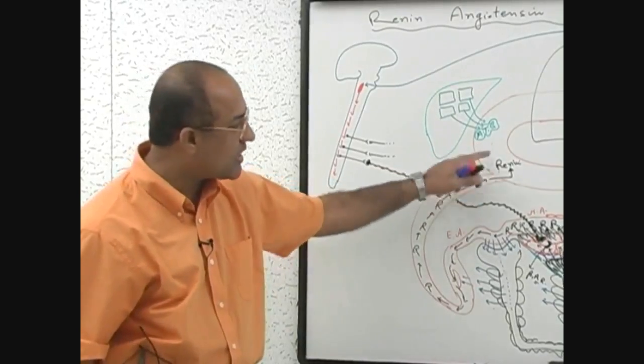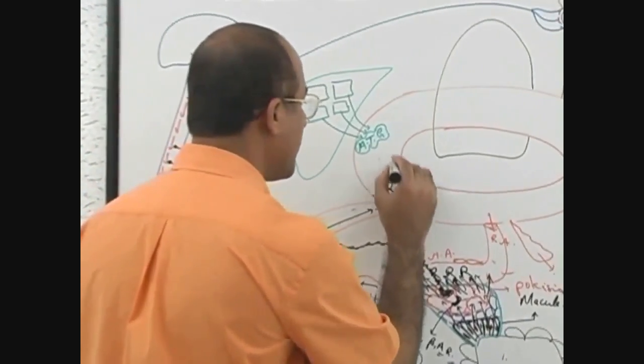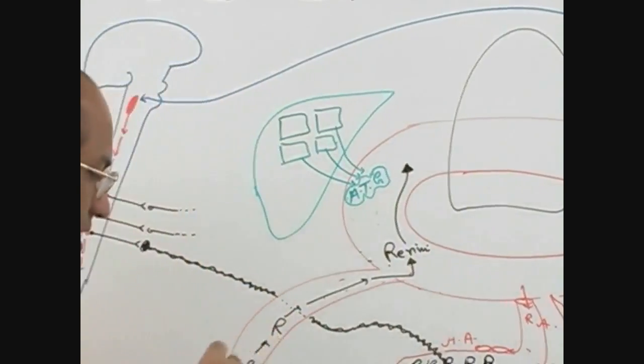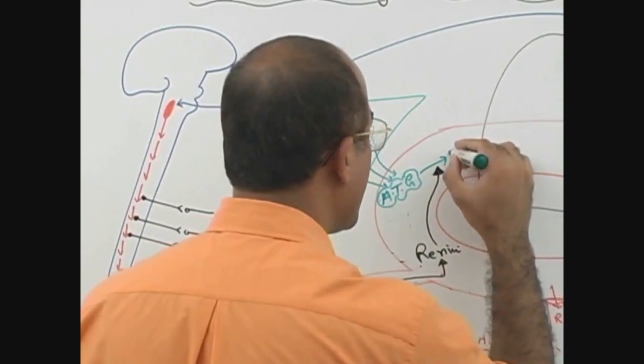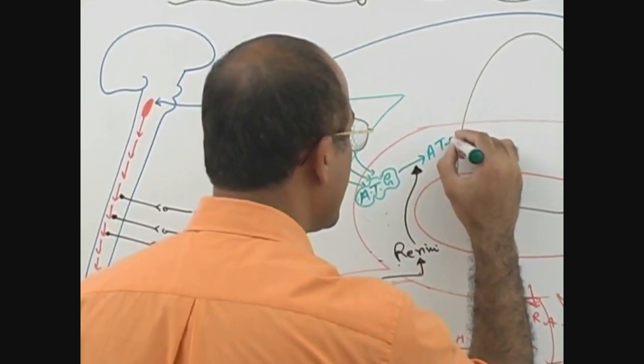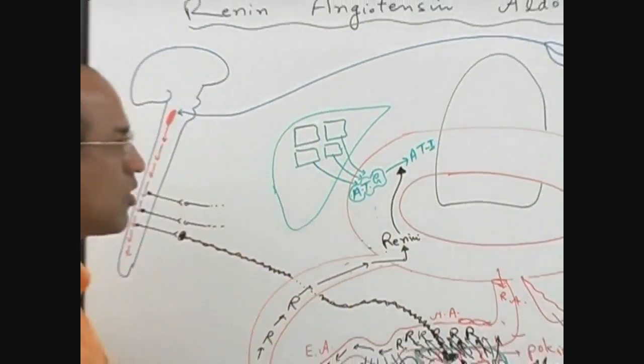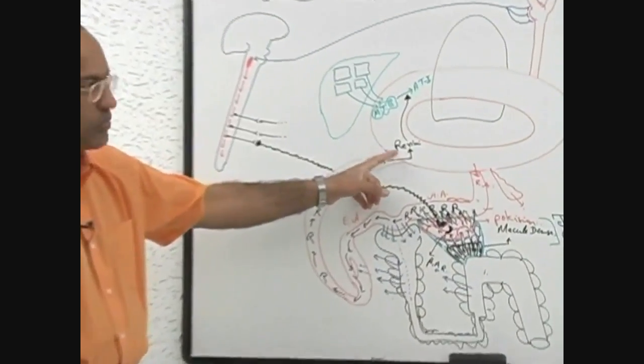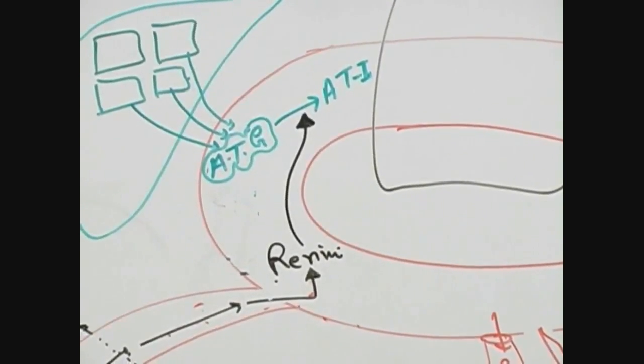But as soon as renin comes, it will work on angiotensinogen and convert the angiotensinogen into angiotensin-1. What is the function of renin? Renin is an enzyme which can convert angiotensinogen into angiotensin-1.